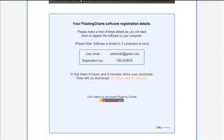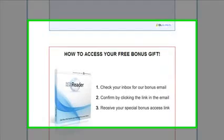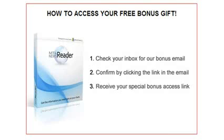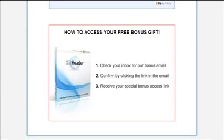Before we go ahead and install the software, I'd like to quickly explain how you get access to your special bonus which comes with MT4 floating charts. If you scroll down the page a little bit further you'll see another box which contains three simple steps to get access to this bonus. All you have to do is check your inbox for an email we've sent you. Inside this email there'll be a confirmation link asking you to confirm that you'd like to receive this bonus. Once you click on that link you'll receive a second email with full access to the bonus, including instructions on how to install it.